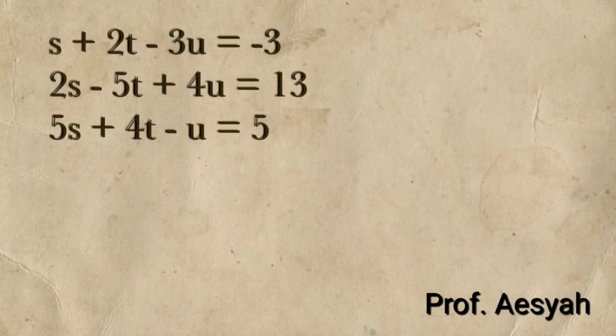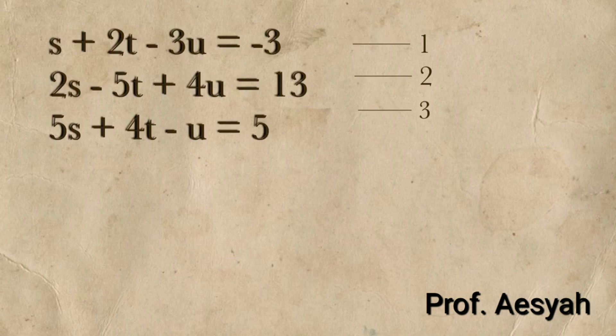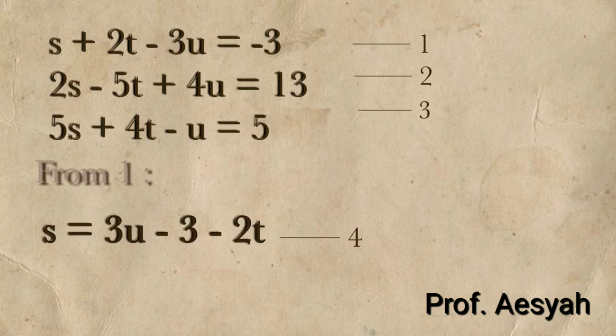Now, it's pretty straightforward. The first thing that we've got to do is label each and every one of the equations as equation 1, 2, and 3. After you've done so, we're going to construct a fourth equation by identifying which one of the equations is the easiest to convert. In this case, I used equation 1, in which I made S as the subject so that it can be substituted easier later.